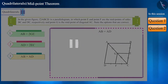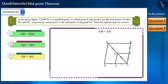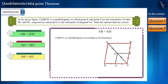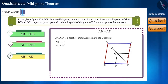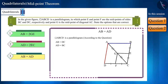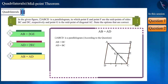Now for the third option — pause the video and check it yourself. ABCD is a parallelogram and the opposite sides of a parallelogram are equal. But the sides mentioned in this option are adjacent sides. If these were equal, then quadrilateral ABCD would have to be a rhombus, which is not the case. Therefore this option is incorrect.